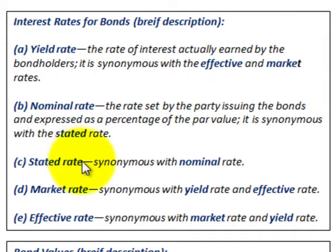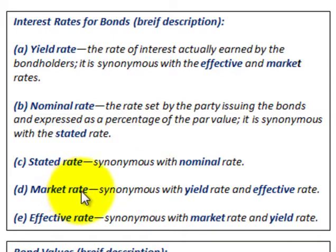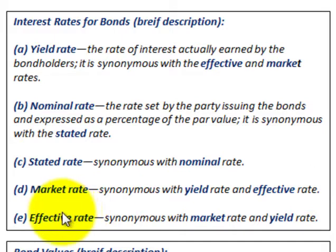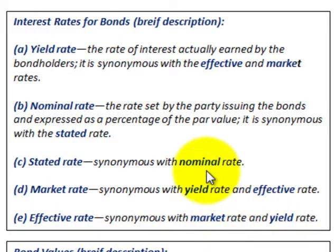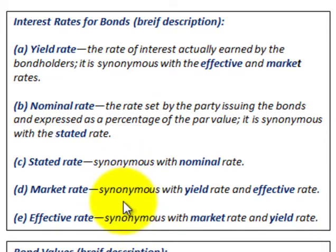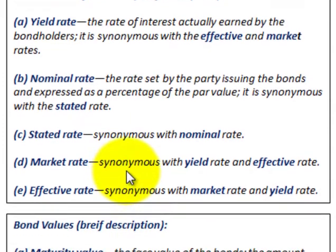The stated rate is synonymous with the nominal rate. The market rate is synonymous with the yield rate or effective rate on the bond. The effective rate is synonymous with the market rate or the yield rate. These terms are repeated by definition so you understand the different interest rate terms used when referring to bonds.